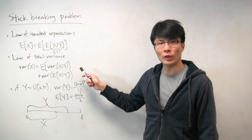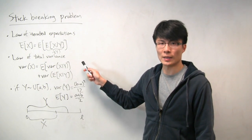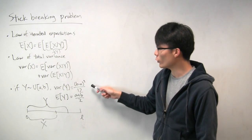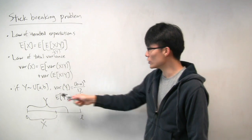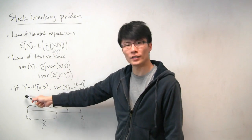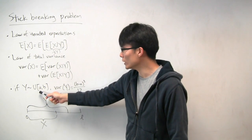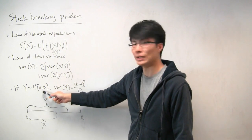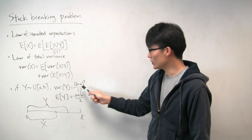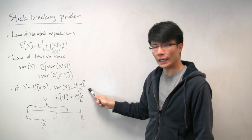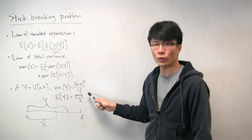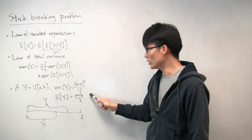In this problem, we'll actually see an example of how this plays out. One more useful thing to recall is that if y is a uniform random variable distributed between a and b, then the variance of y is (b minus a) squared over 12, and the expectation of y is just the midpoint, (a plus b) over 2.